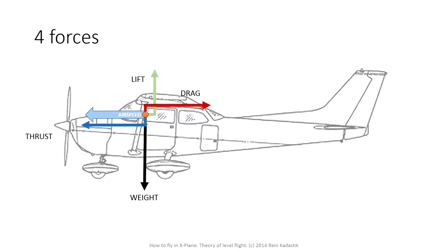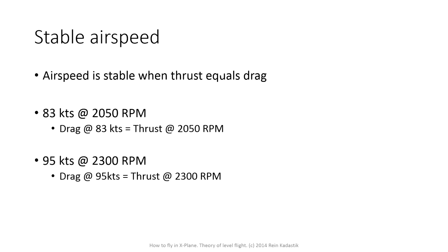When doing level flight or any cruise flight, a stable airspeed is very much desired. To get stable airspeed, you need to keep thrust and drag equal. You cannot usually change the drag much — the airplane fuselage is as it is. But you can change thrust. So for each and every airspeed, there is a matching thrust, and when you apply a certain amount of thrust, the airspeed will stabilize at a certain value. To stabilize airspeed, you need to create a condition where thrust equals drag.